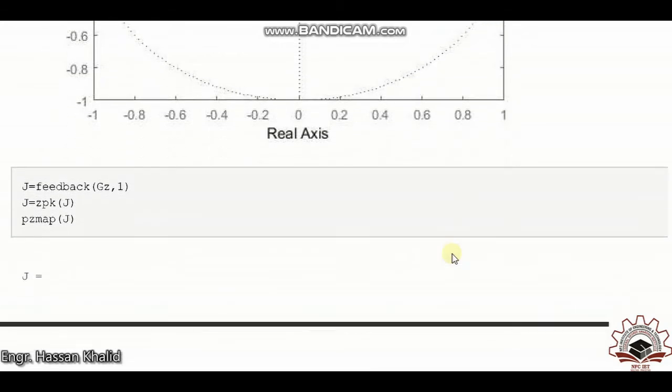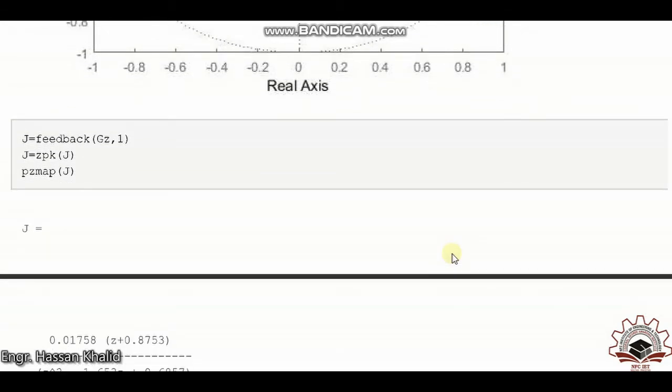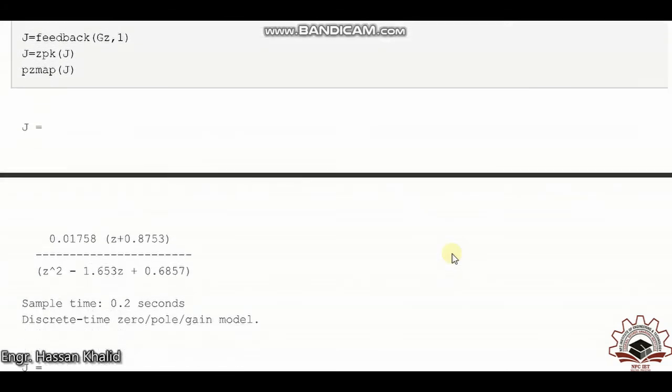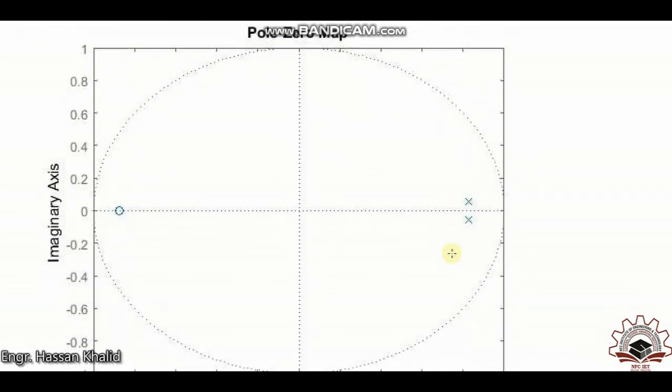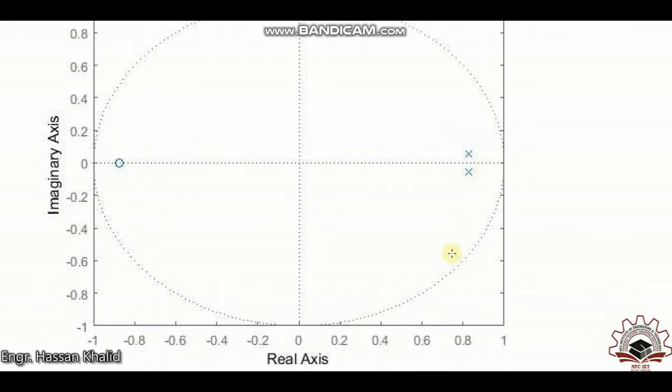Now let's apply the feedback to make the complete closed loop system. Afterward, we can see that the poles have moved from the marginally stable position within the unit circle. There are now two poles at the same location but above and below the plane.